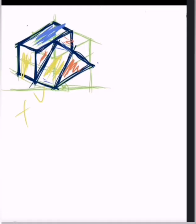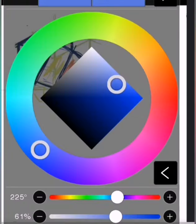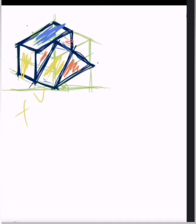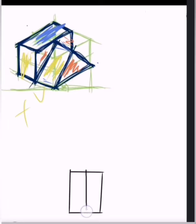We have here the object which is in the isometric projection. Now let us draw or transform this one into an orthographic projection. First, let's draw the front view — this is how the front view will look like. So we have this front view.